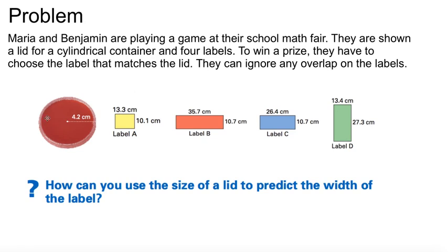So here would be the container. This is the lid base or the top of the cylinder, and these are the four labels. Which one of these labels would fit on a container with this being the base or the top? How can you use the size of the lid to predict the width of the label?